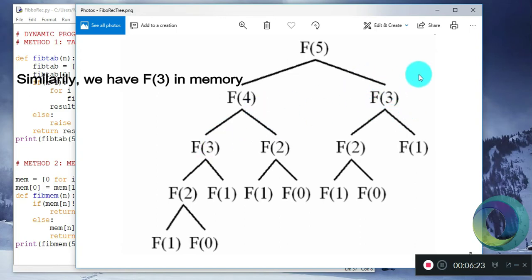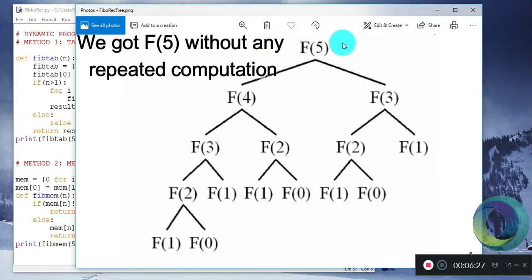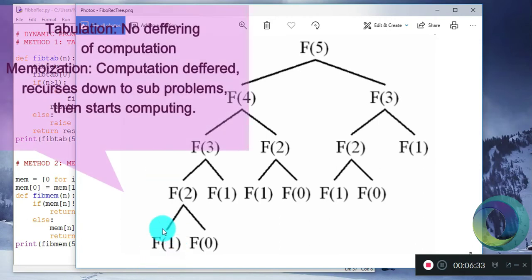Hence we get fibmem 5 without repeating any calculation. The difference between memoization and tabulation is that in tabulation all the computations are occurring at that step only, but in memoization we are deferring the computation. We are not performing the computation at that point, but when the tree starts to open, then we are performing all the computations.